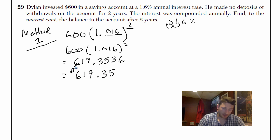And that's it. Let me just make sure I did this right. 1.016 squared. Where's my squared key? Squared equals times 600. Yeah. That's it. That's all you got to do.